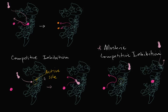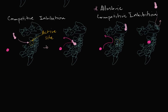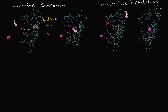So if that's competitive inhibition — where it's about who gets to the enzyme first — what is non-competitive inhibition all about? Well, let's draw that. The big picture with non-competitive inhibition is that both the substrate and inhibitor can bind. Whether one binds to the enzyme doesn't affect whether the other binds.